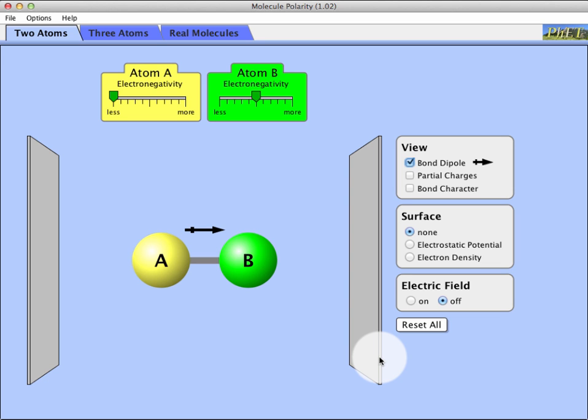To get us started with talking about molecular polarity and bond polarity, let's start with bond polarity. I've opened up the molecule polarity model from PhET. It's the same model I'm going to have you investigate later on when you address the discussion prompts. By default it'll open up into the two atoms tab, and by default it'll also show one atom having a different electronegativity value than the other.